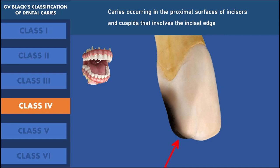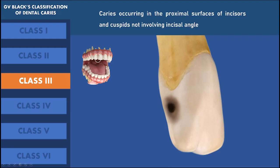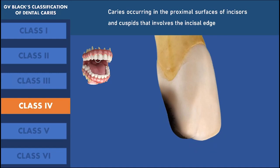So, caries which does not include the incisal angle of the anterior teeth but does occur in the proximal surface is class 3. But once the caries extends and involves the incisal edge of the anterior teeth, it is class 4 dental caries. Caries which occurs in the proximal surface of the posterior region is class 2. For the anterior region, depending upon the involvement of the incisal angle, it can be either class 3 or class 4.